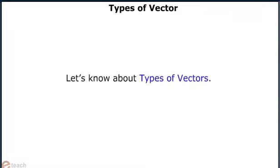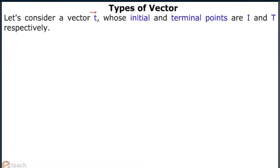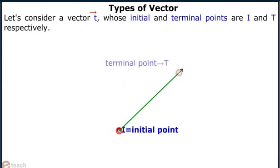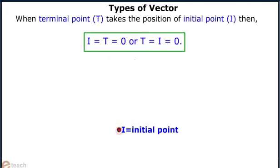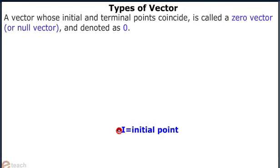Let us know various types of vectors. Consider a vector whose initial and terminal points are I and T respectively. When the terminal point T takes the position of initial point I, then I equals T equals 0. Thus, the vector has 0 magnitude. Such vectors are called zero vectors or null vectors.